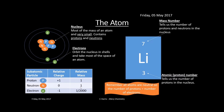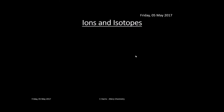Familiarize yourself with elements — here's lithium for example. The top number tells us the mass number: the number of protons and neutrons in the nucleus. The bottom number tells us just the number of protons — we call this the atomic number or proton number. All atoms are neutral because the number of protons equals the number of electrons.